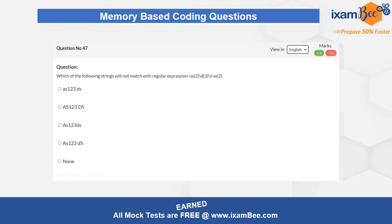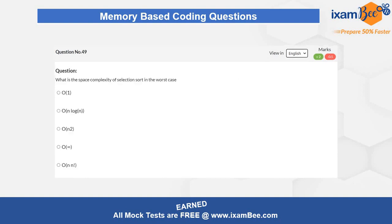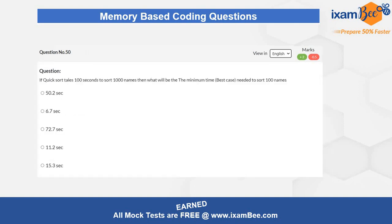Question number 47 is related to regular expressions and you have to identify which particular regular expression will not match the statement given in the question. Question number 48 is related to a complete binary tree, where you have to identify which nodes have at most one child. Question number 49 is related to the space complexity of selection sort in the worst case — a static yet conceptual question.